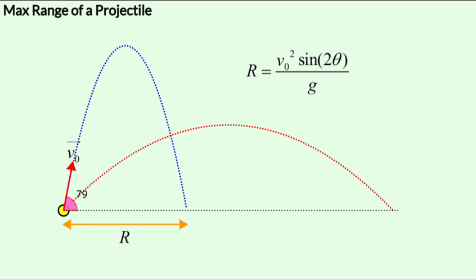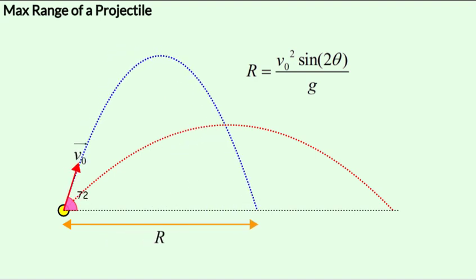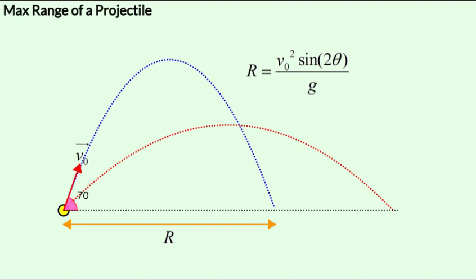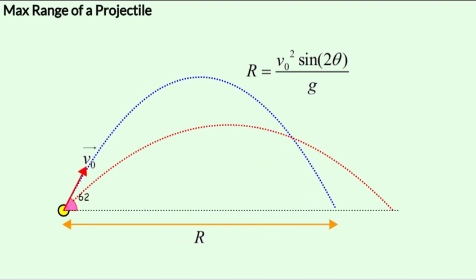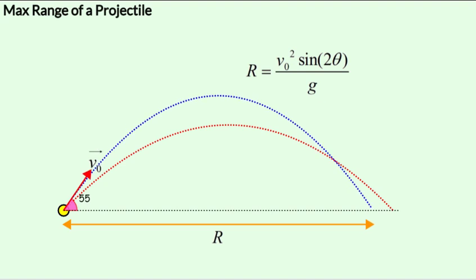Now let's move it backwards one more time. And now you get an idea that a 45 degree launch gets you the maximum range.